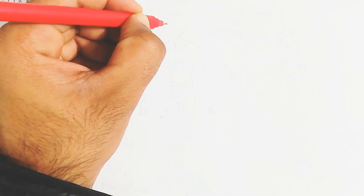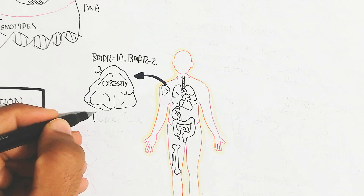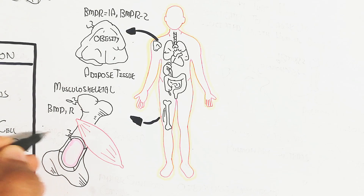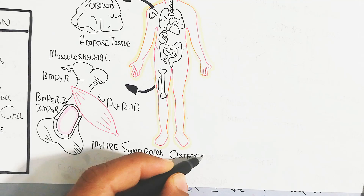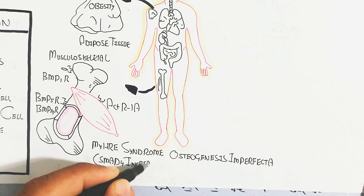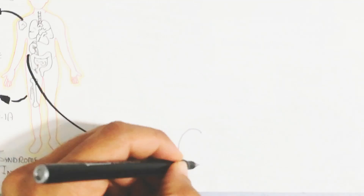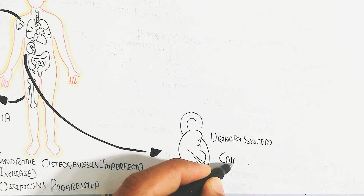Disease can progress due to decrease or increase of BMP receptor availability. In adipose tissue, increased BMP receptor 1a and BMP receptor 2 will lead to obesity. In the musculoskeletal system, BMP-1 receptor, ACT receptor 1a, BMP-5, and BMP-14 receptors can cause complications like Mayer's syndrome, osteogenesis imperfecta, and when SMAD4 increases intracellularly, fibrodysplasia ossificans progressiva.